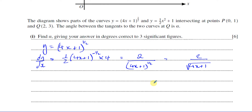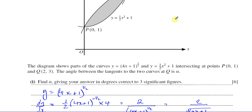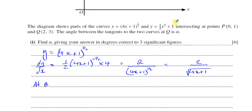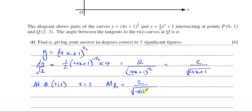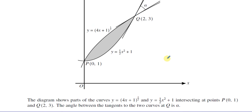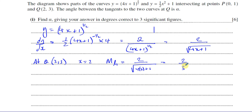We want the gradient at point Q, which has coordinates (2, 3), so x = 2. The gradient of tangent 1 is 2 over the square root of (4 × 2 + 1) = 2 over the square root of 9 = 2 over 3. So the gradient of the first tangent is 2/3.